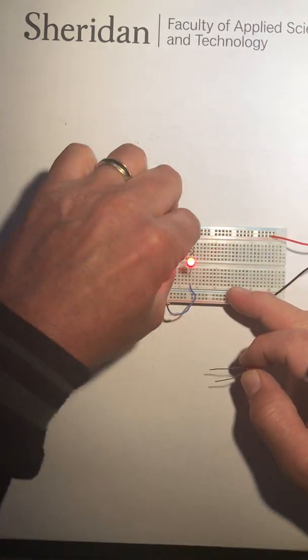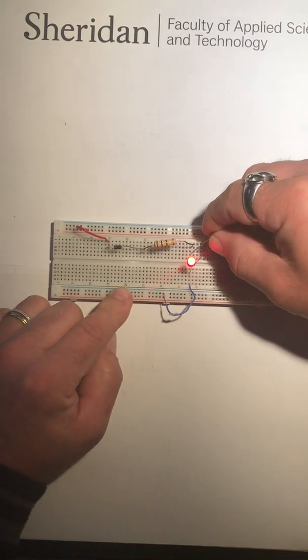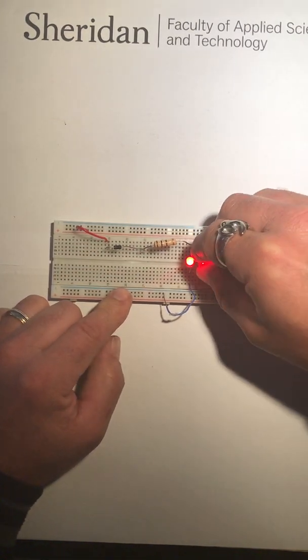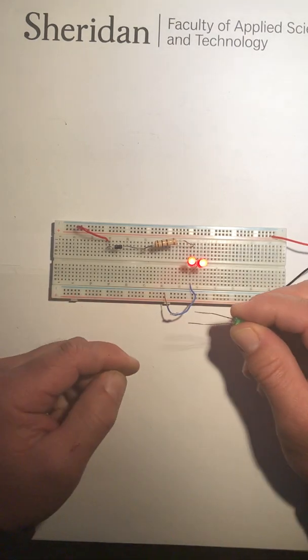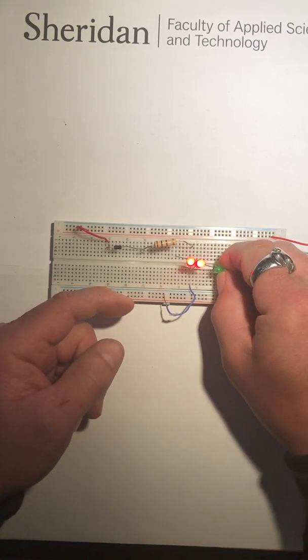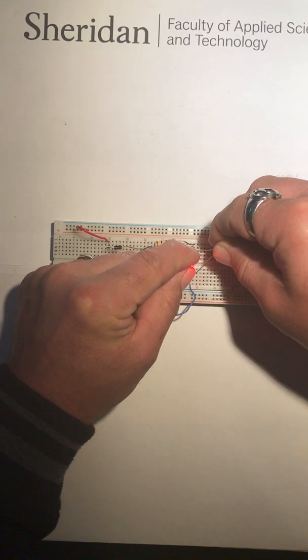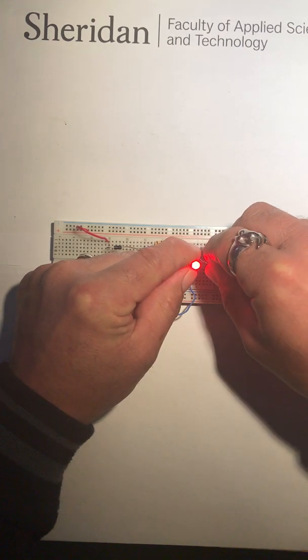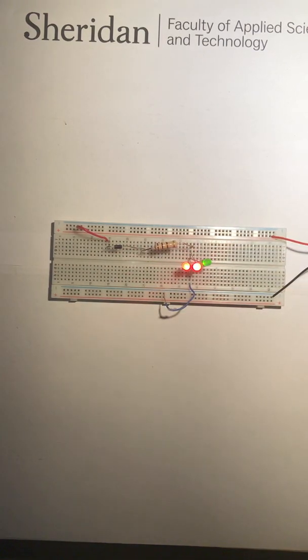I'm going to put a couple more in here in parallel with that. Let's put that there and there and see if this green one's working. Again, want to make sure I'm biasing it correctly. That green one is working, not quite as bright as the red ones. I'll put that in there, so now I have three that are working.